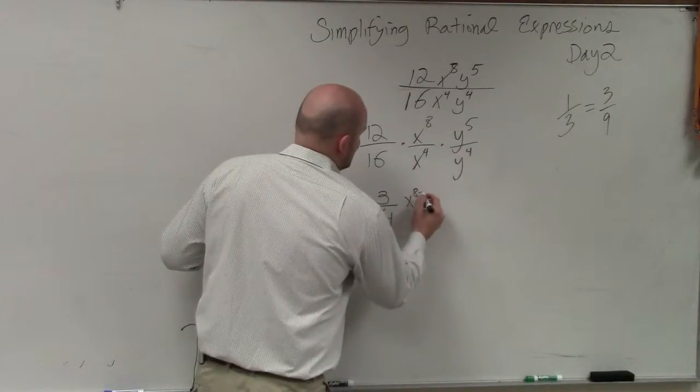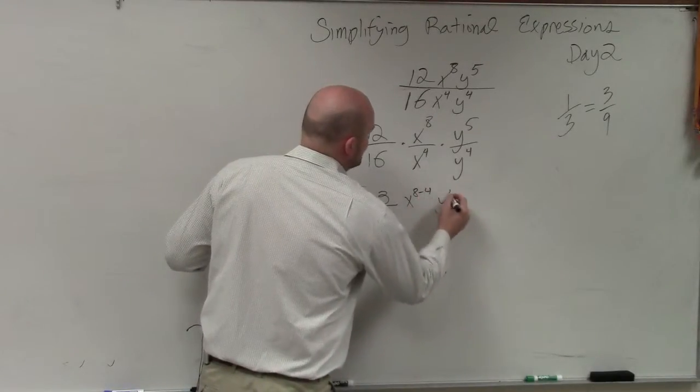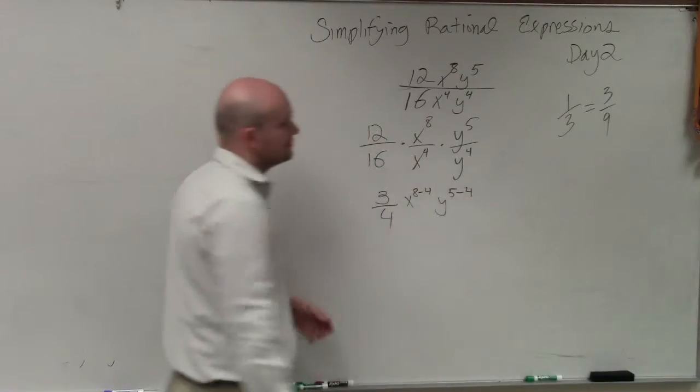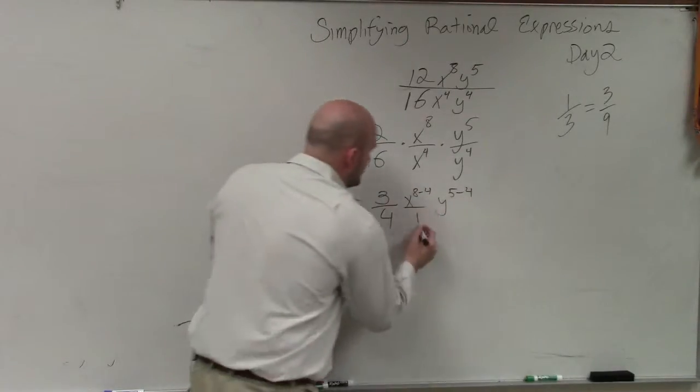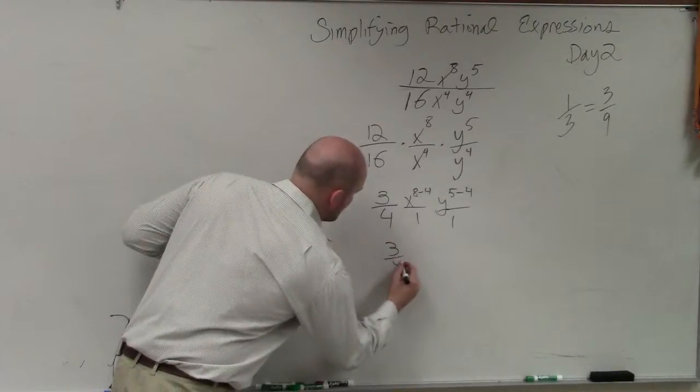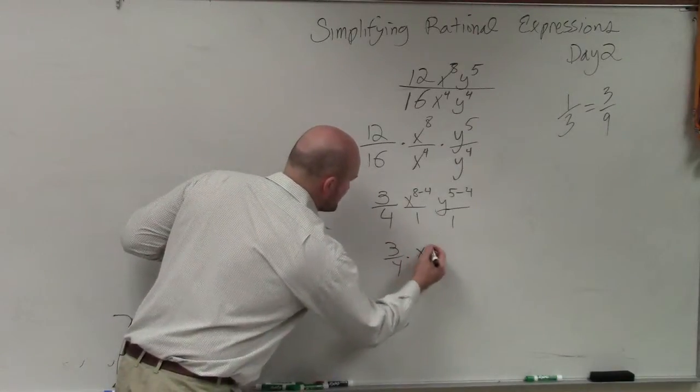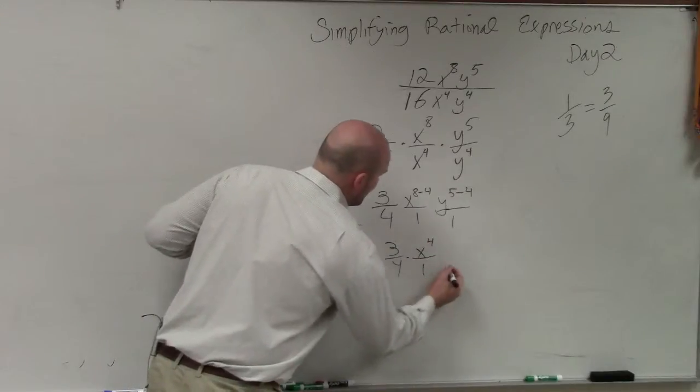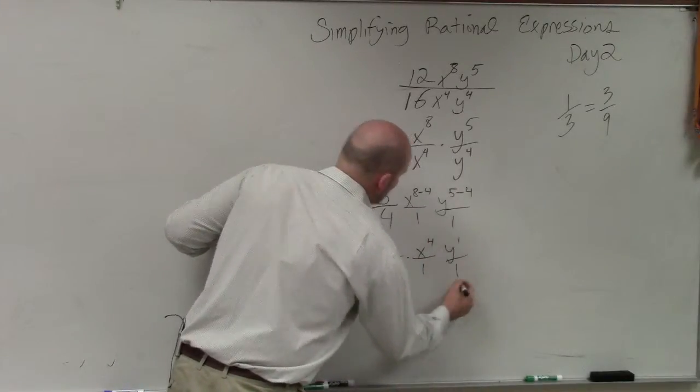So x to the 8 minus 4, and then y to the 5 minus 4. And then these are all in the numerator. So therefore, I get 3/4 times, I will move in just a second, x to the 4th over 1, y to the 1st over 1.